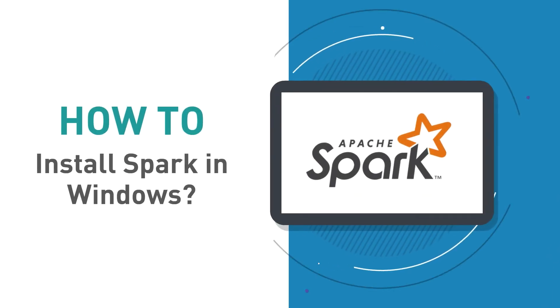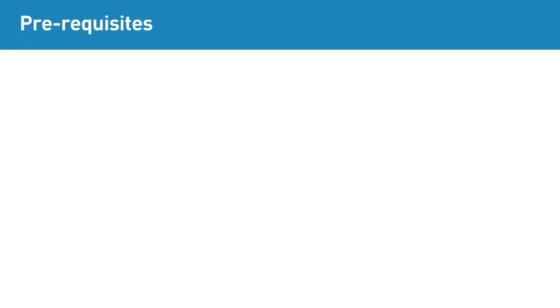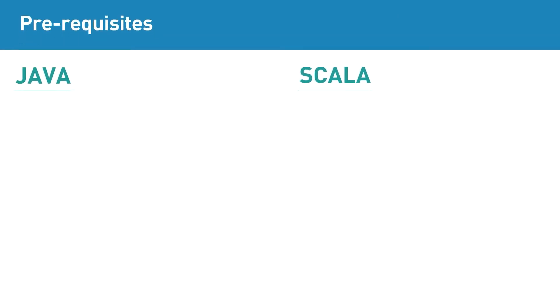How to install Spark in Windows. Prerequisites: you should install Scala and Java prior to installing Apache Spark on Windows.